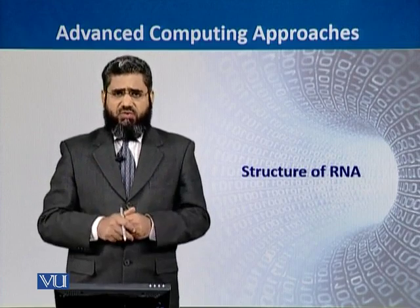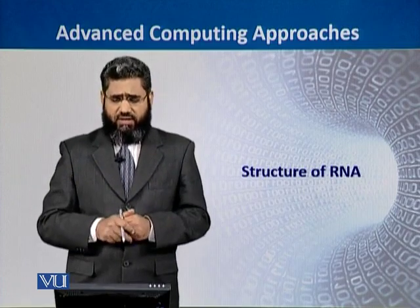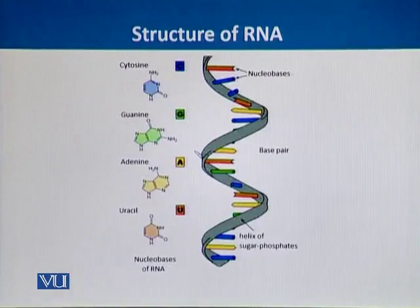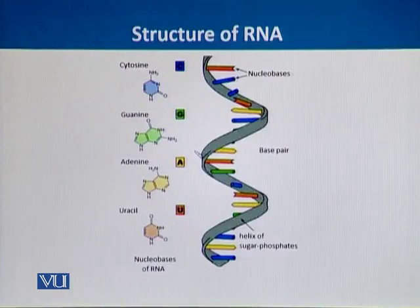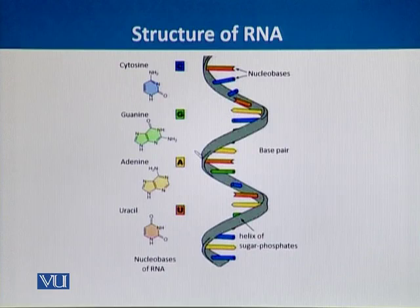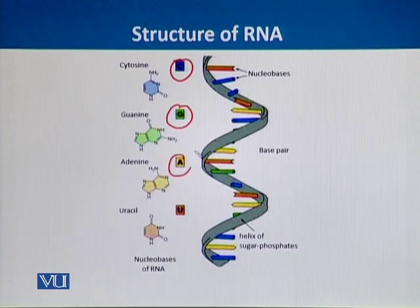Now we will see the structure of RNA. RNA is a single-stranded molecule — although it is polymeric, it is single-stranded. Just like DNA, it also constitutes four nucleotides: cytosine, guanine, and adenine.